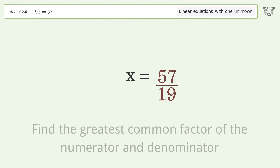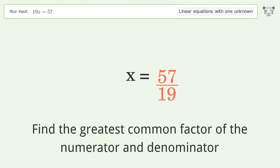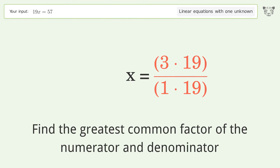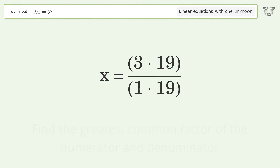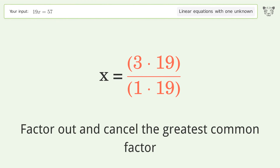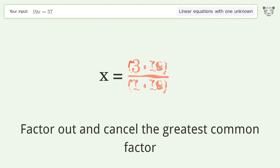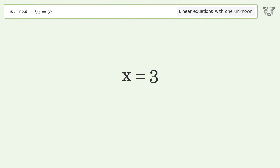Find the greatest common factor of the numerator and denominator. Factor out and cancel the greatest common factor. And so the final result is x equals 3.